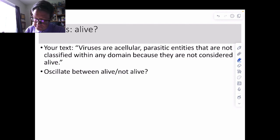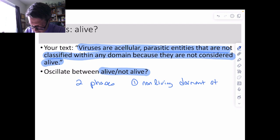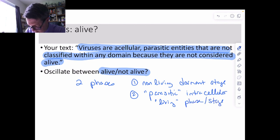Whether you think they're alive or not is irrelevant because they're everywhere. From your textbook, viruses are acellular parasitic entities that are not classified with any domain because they're not considered to be alive. What they seem to do is oscillate between being alive and not alive. So they have two phases: they have a non-living dormant stage, then they seem to have a parasitic intracellular, quote, living phase or stage. So does this mean they're alive? Don't know. And it gets further complicated by the fact that we're not sure where they come from.